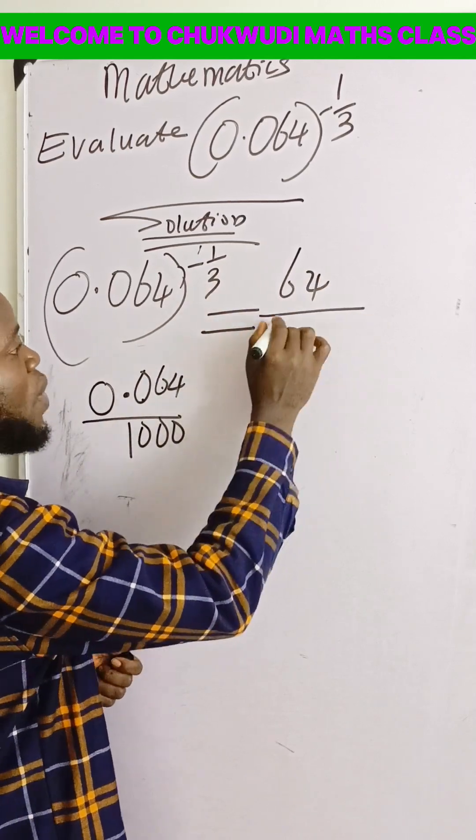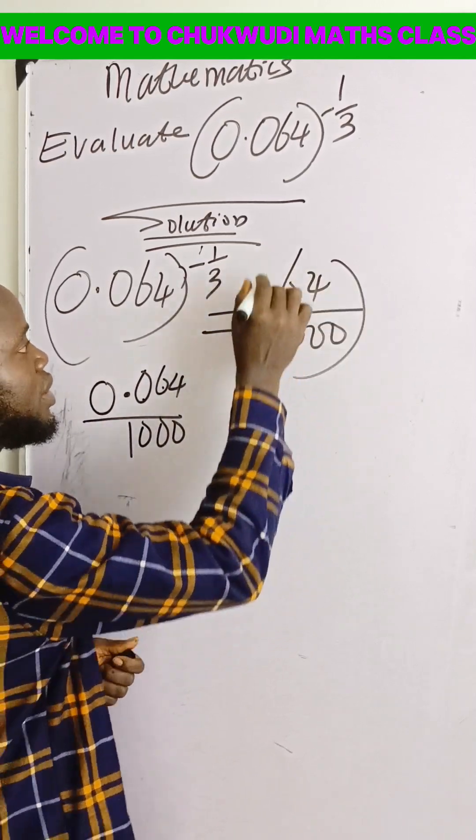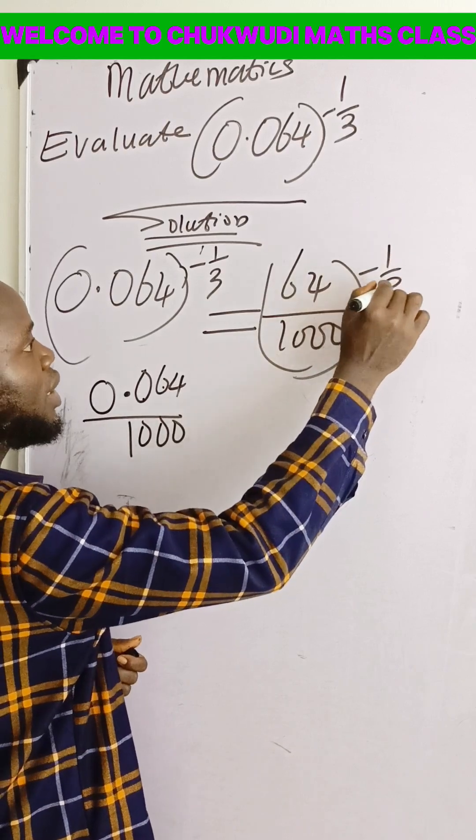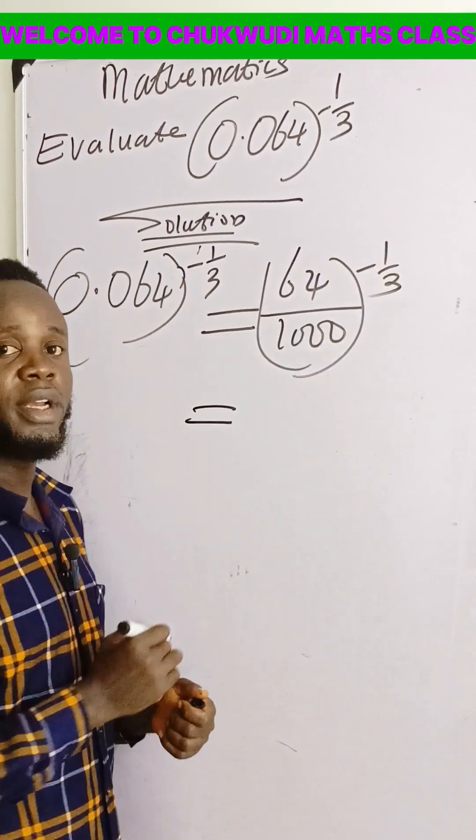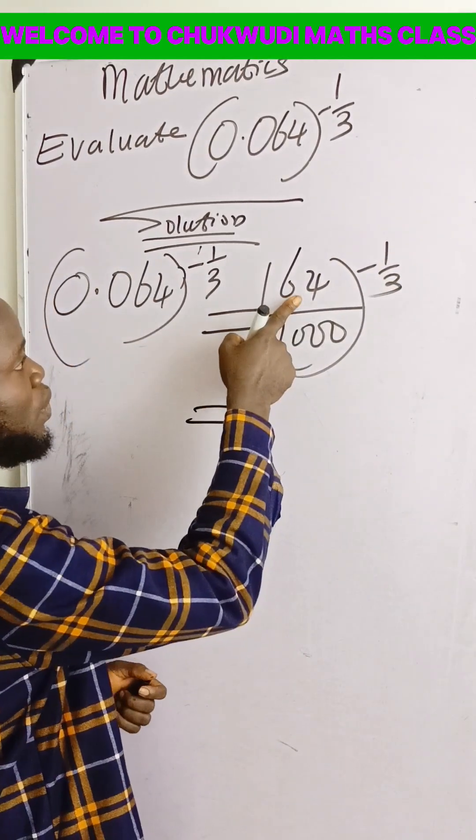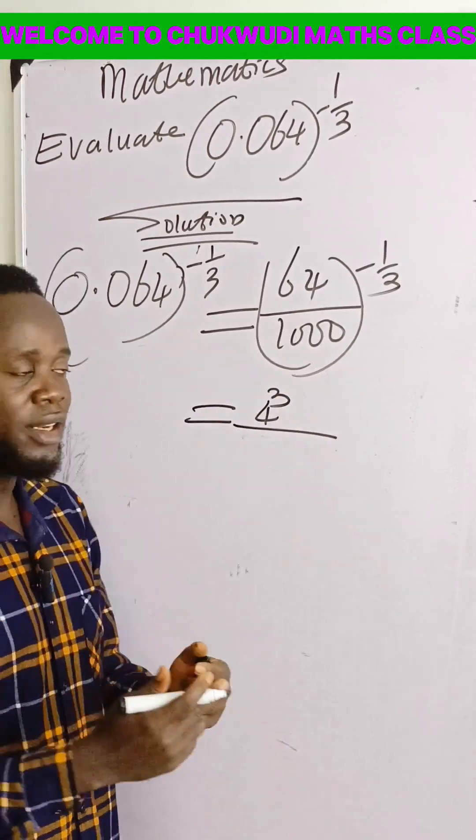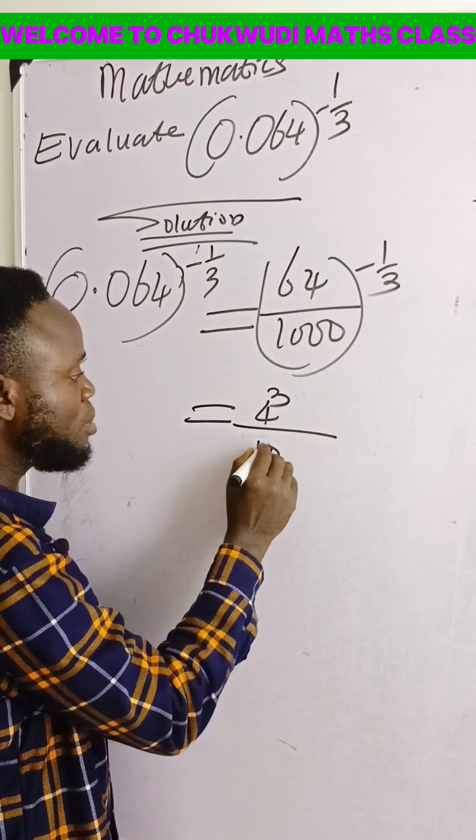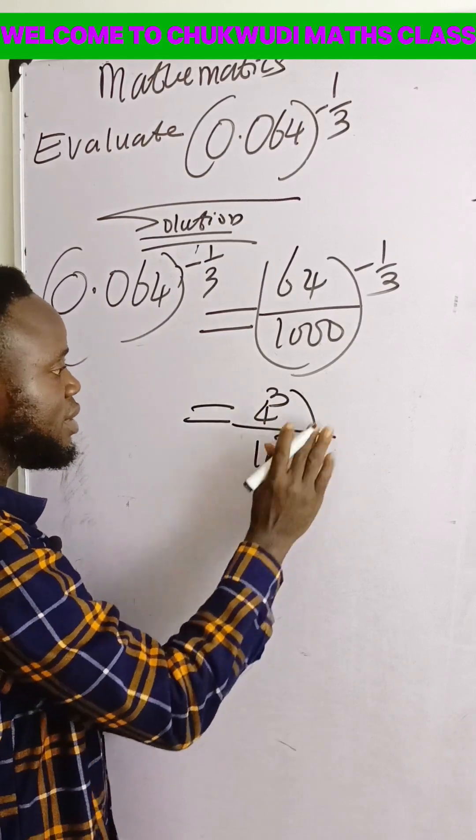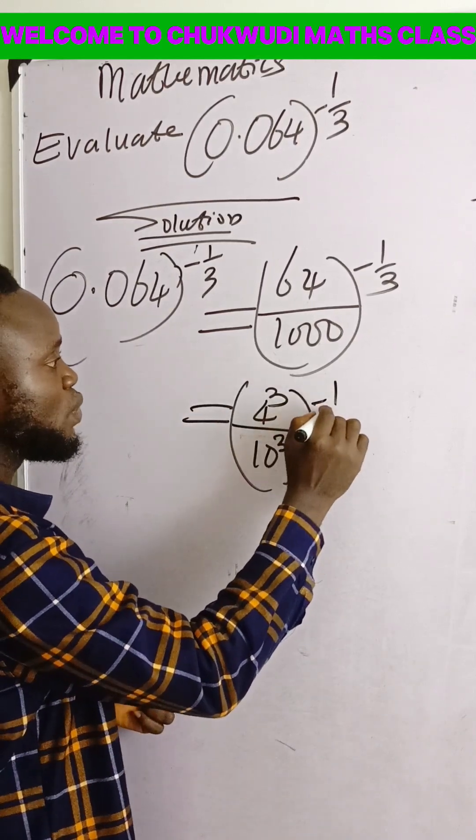64 over 1000 raised to the power minus 1 over 3. Then what we have now here is this: if you look at 64, you know that 64 is 4 raised to the power of 3, and 1000 is 10 raised to the power of 3. This is raised to the power of minus 1 over 3.